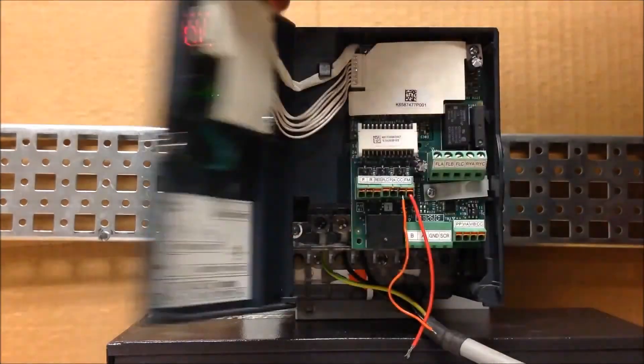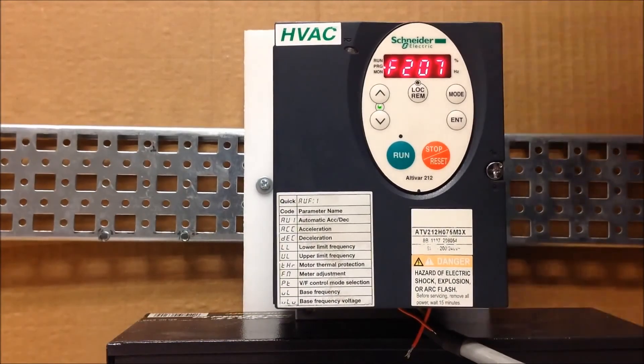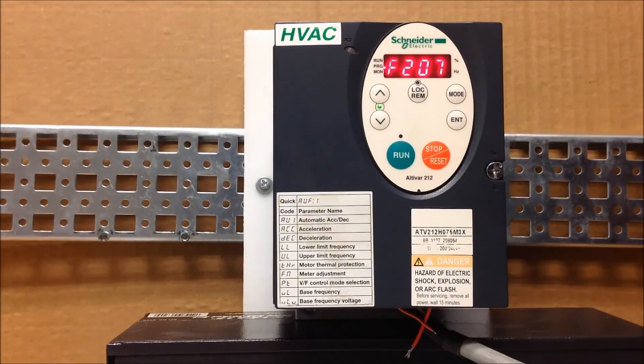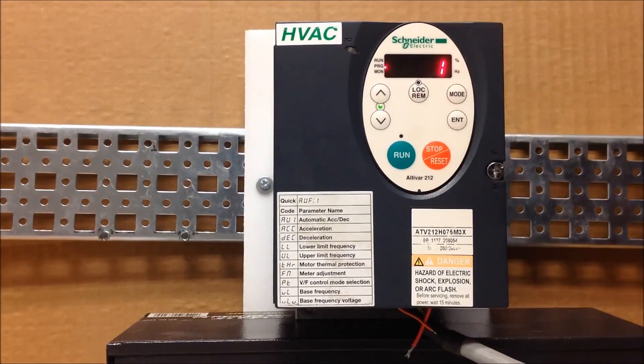To recap what's going to happen: we have programmed your R as a reference switching frequency functionality. With R getting no signal, your FNOD takes over as a speed value. When R is triggered, then the F207 value is going to take over, which is right now programmed as a one for VIA. This is how you go back and forth between two different speed sources on the ATV212 drive.